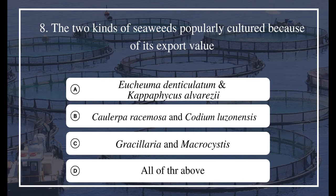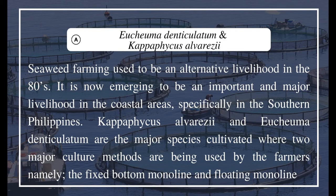Question 8: The two kinds of seaweeds popularly cultured because of their export value — a) Eucheuma denticulatum and Kappaphycus alvarezii, b) Caulerpa racemosa and Codium luzoniensis, c) Gracilaria and Macrocystis, d) All of the above. The answer is A, Eucheuma denticulatum and Kappaphycus alvarezii. Seaweed farming, once an alternative livelihood in the 1980s, is now an important livelihood in coastal areas, specifically in southern Philippines. Kappaphycus alvarezii and Eucheuma denticulatum are the major species cultivated using two culture methods: the fixed bottom mono-line and floating mono-line.